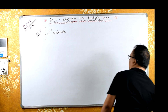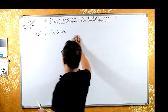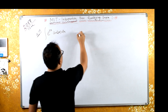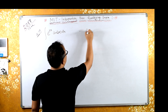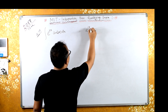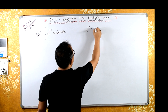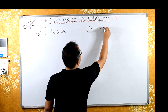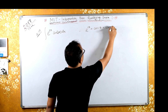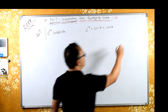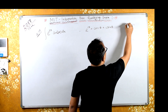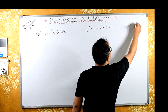Now we will solve it a different way, in complex form. By Euler's theorem, e raised to i·theta can be written as cos(theta) plus i·sin(theta) in complex form, where i squared is minus 1.